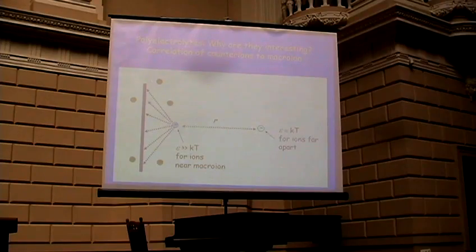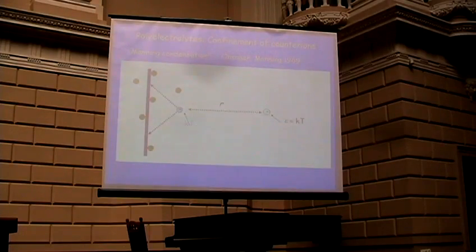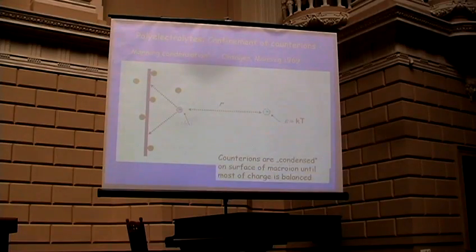It's very important to understand where are the counter-ions, and I will give a very important argument which goes back to people like Oosawa and Manning. Consider one counter-ion here in some distance from the highly charged rod. You have an interaction of the negatively charged counter-ion with many positive sites, so we have a very strong attraction. If this counter-ion would be far apart, its energy is typically of the order of kT. So there can't be any equilibrium. What will happen? We will have counter-ion condensation.